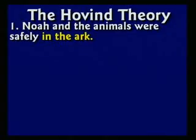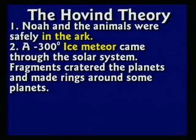I'll go through eight points fast first, then we'll discuss each one. Point one: Noah and the animals got safely into the ark — God shut the door. Point two: a 300-degrees-below-zero ice meteor came flying through the solar system and began to break apart. Fragments became rings around Saturn, Uranus, and Neptune; some hit planets causing craters; and some hit the north and south poles, freezing the mammoths.